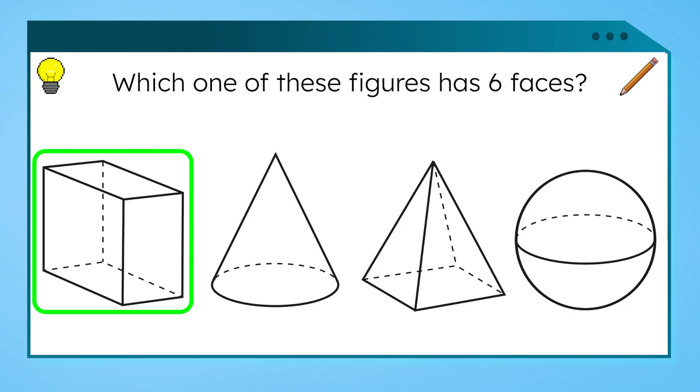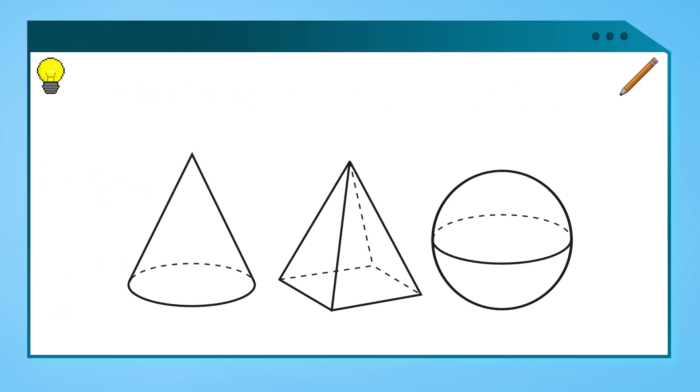Yes. The rectangular prism has six faces, just like the cube we looked at. The solution cannot be the rectangular prism because we need a shape with no faces.